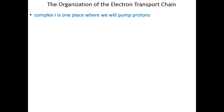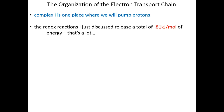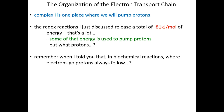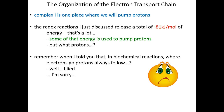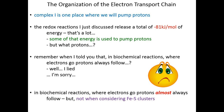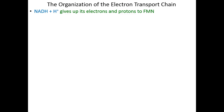I already mentioned that we're going to pump protons as part of the electron transport chain, and we're going to do that right away in Complex I. The redox reactions just described release a total delta G of negative 81 kilojoules per mole — a lot of energy, some of which is used to pump protons. Now, I should clarify: in biochemical reactions, where electrons go, protons almost always follow — but they don't follow the electrons when it comes to iron-sulfur clusters.